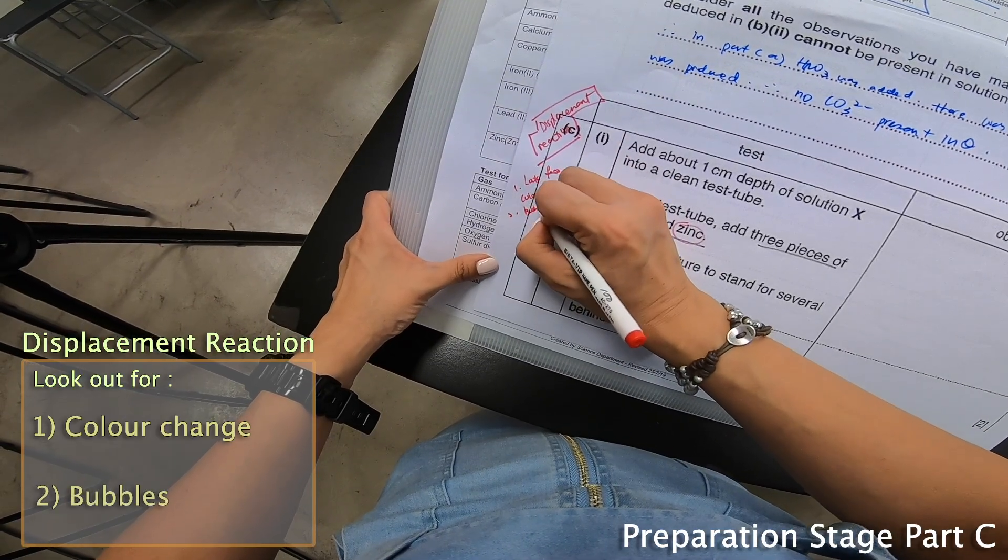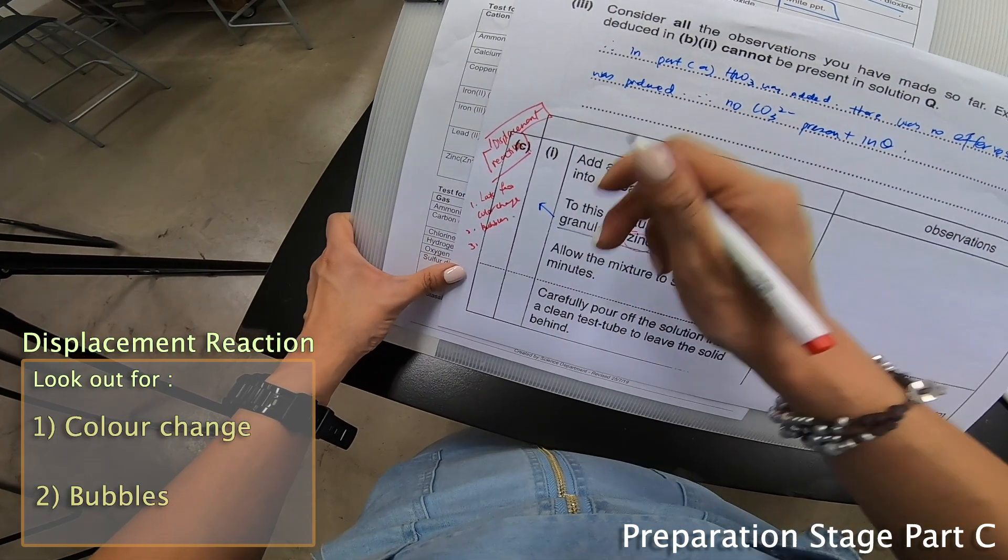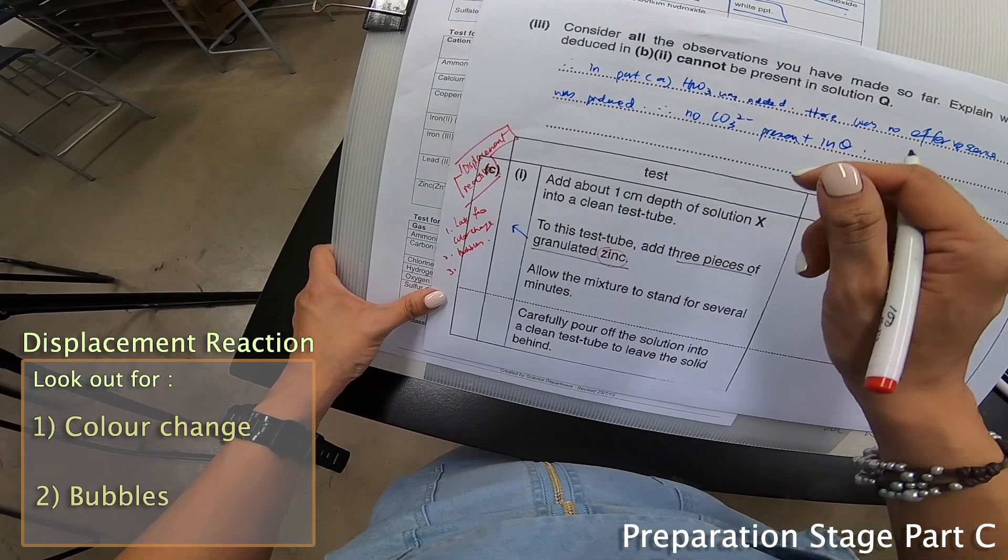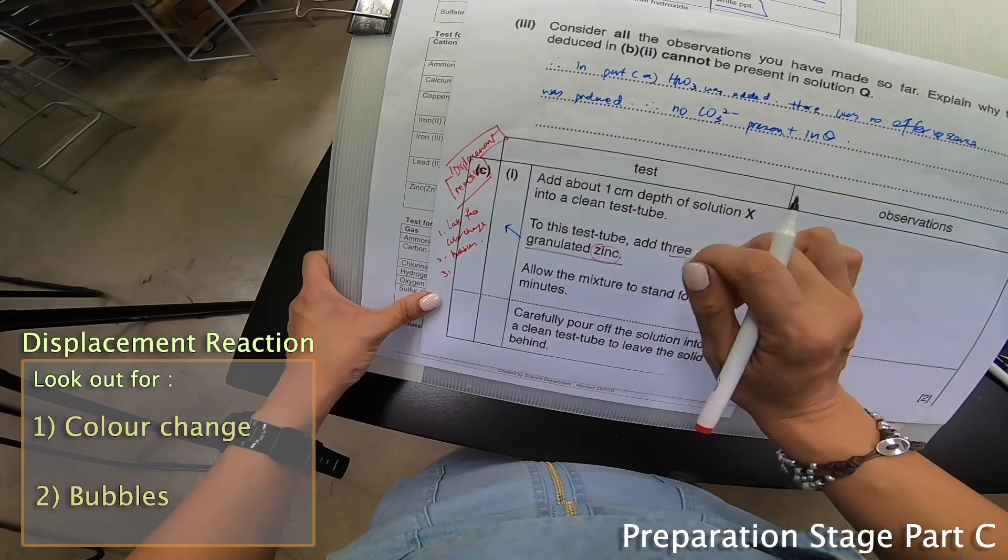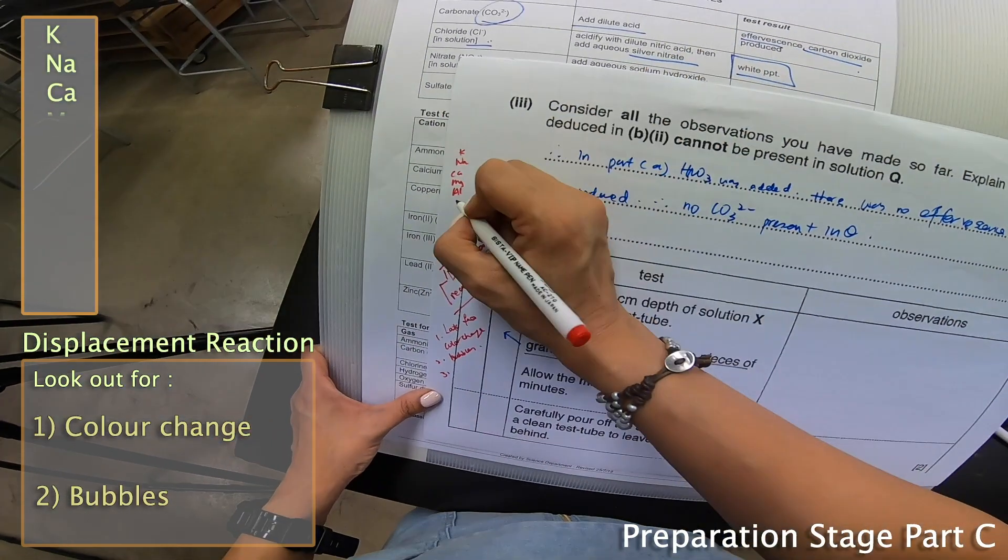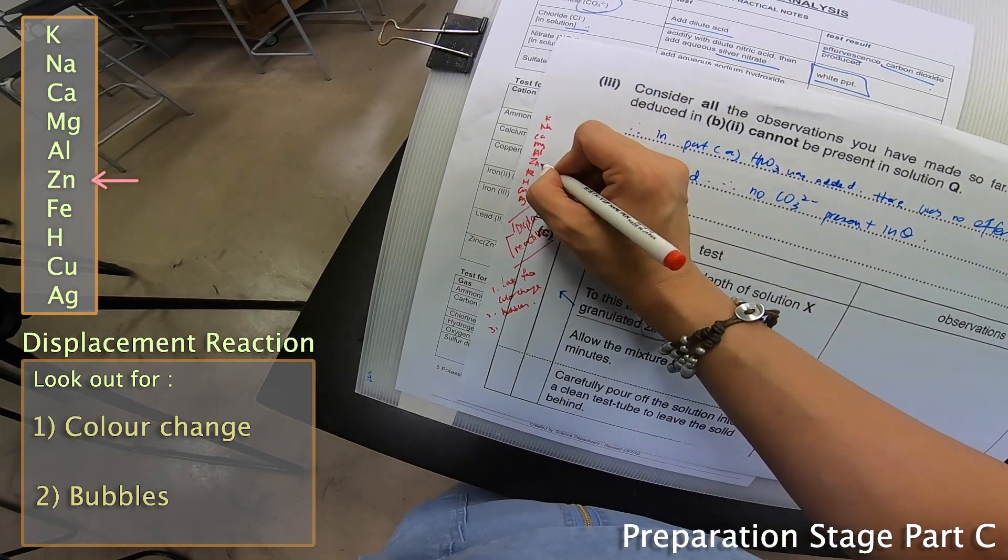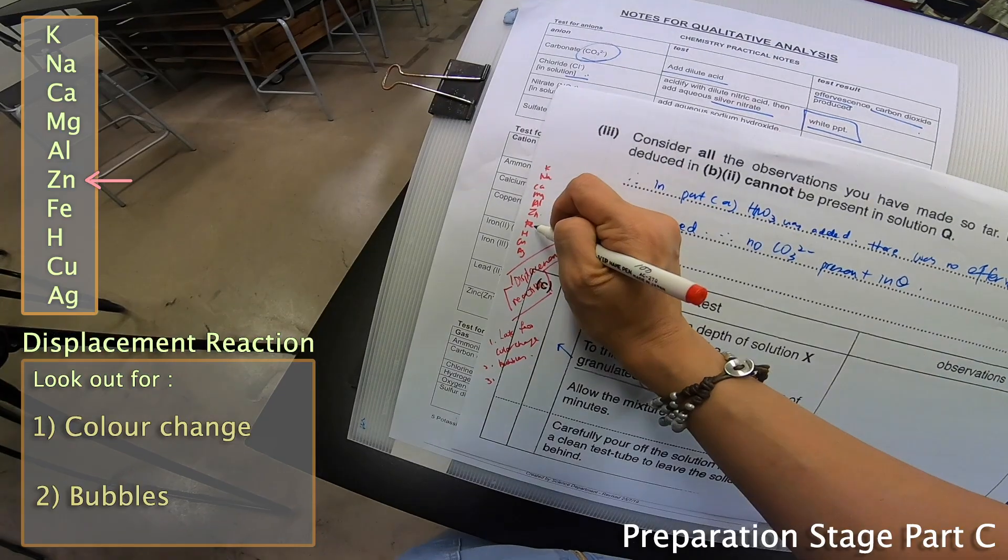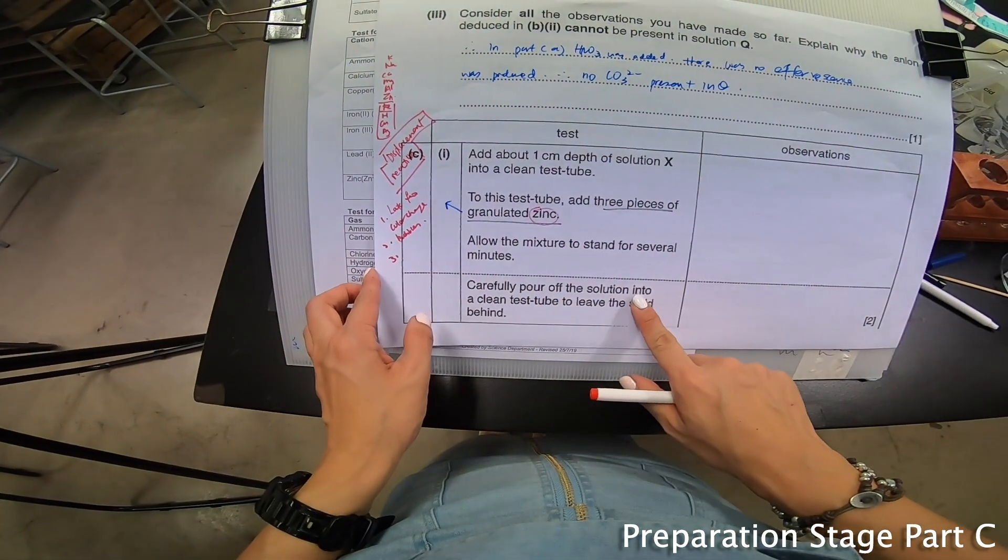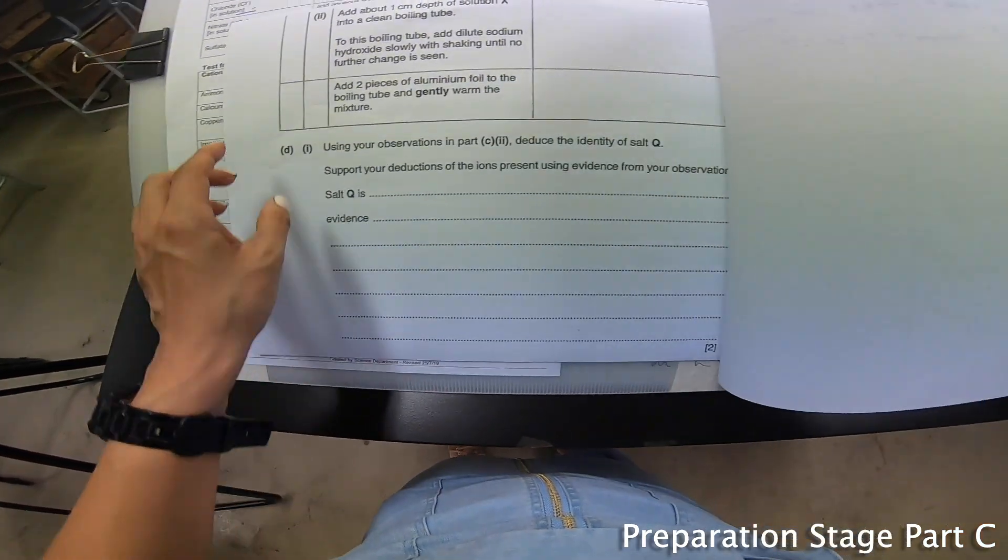According to the reactivity series of metals, you will notice that zinc is quite somewhere in the middle. So if you're guessing what's going on, this must be way below zinc in the reactivity series. Then they say carefully pour off the solution - keyword solution - into a clean test tube to leave the solid behind.